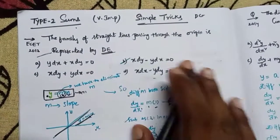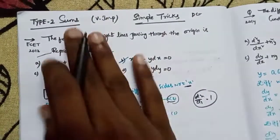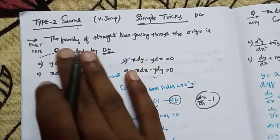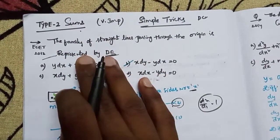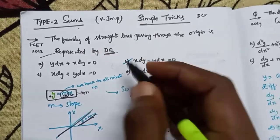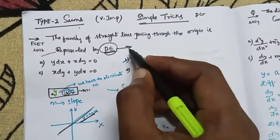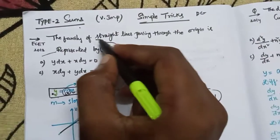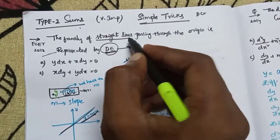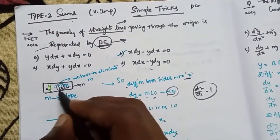If you have a Type 2 problem — for example, if you choose the family of straight lines passing through the origin — here is the differential equation and we will find it. The straight line formula is y is equal to mx.